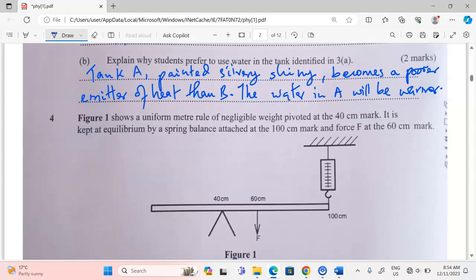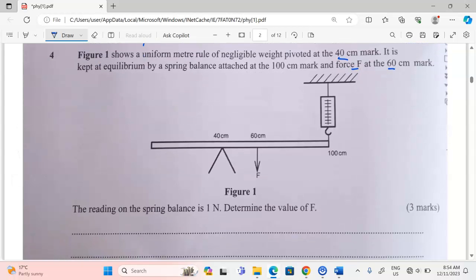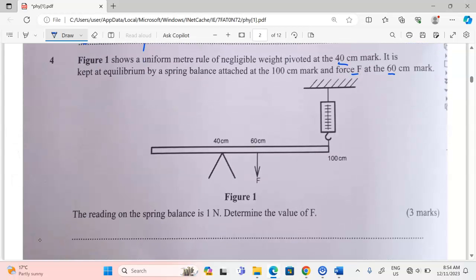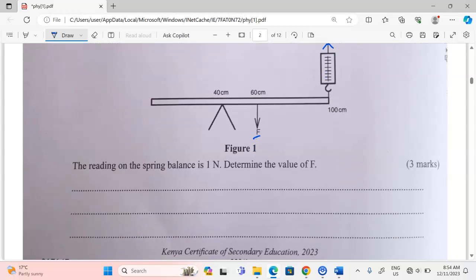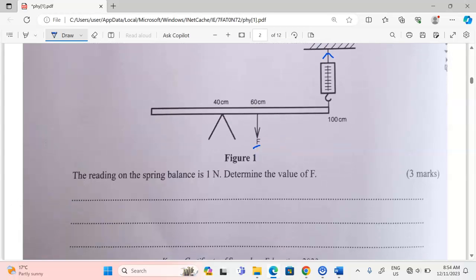Number four. Figure one shows a uniform meter rule of negligible weight pivoted at 40 centimeter mark. It is kept at equilibrium by a spring balance attached at the 100 centimeter mark and force F at the 60 centimeter mark. So we have a diagram there. We have a force F at the 60 centimeter mark. Then there is a spring balance at this point. We are told that the reading on the spring balance is one newton. Determine the value of F.